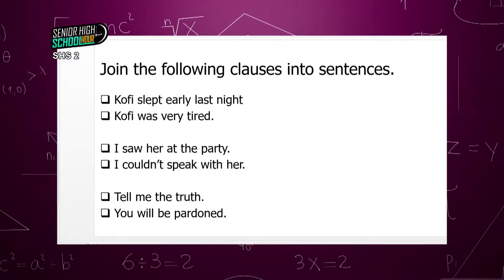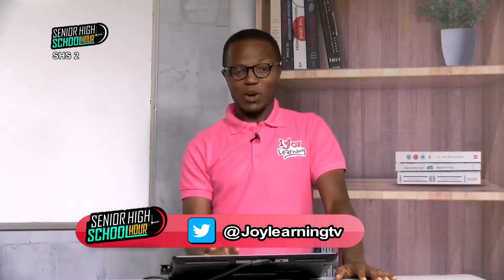Now here are some clauses I have given you, and I am expecting you to join them using some of these subordinating conjunctions. I'm pretty sure you will be able to do this — these are things you are capable of doing. We are to join the following clauses into sentences.